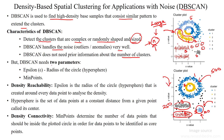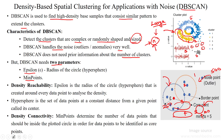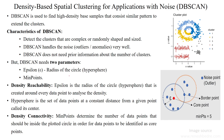DBSCAN needs two parameters: one is the epsilon value and another is the minimum number of data points. The epsilon value defines the distance from a data point to its boundary. It is used to find the radius of the hypersphere or circle created around every data point to analyze its density — that is, to know its neighbors.